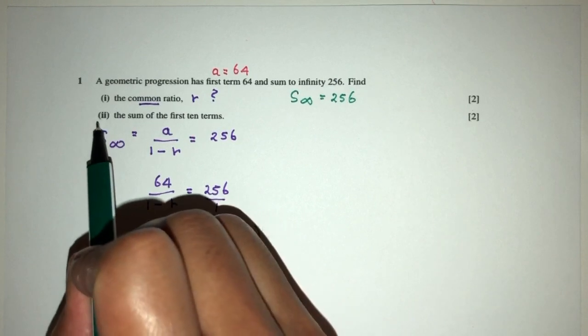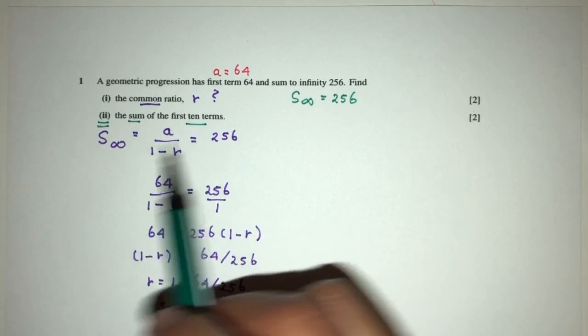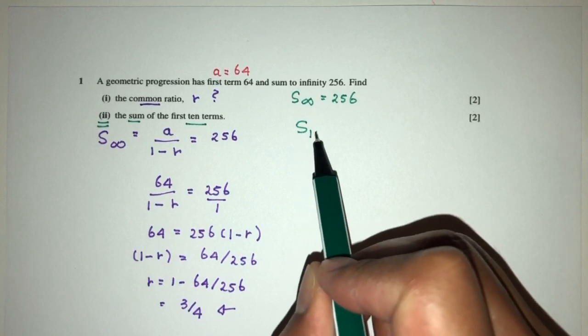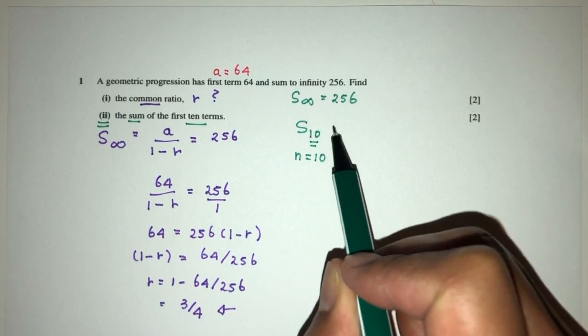Okay, so now let's move on to part two of the question. We have to find the sum of the first 10 terms. So sum of the first 10 terms, so when n or t, the number of terms is equal to 10, we have to find the sum.